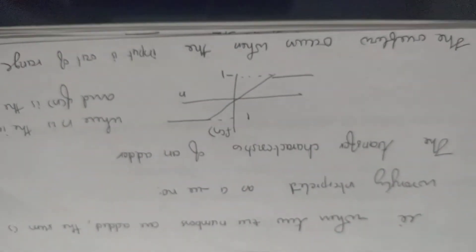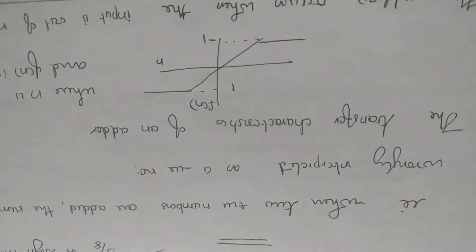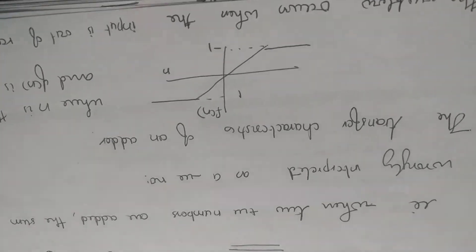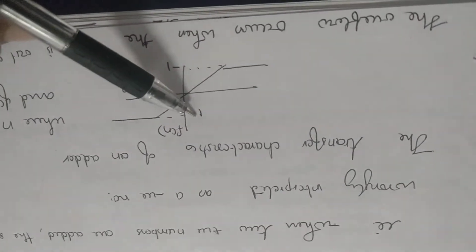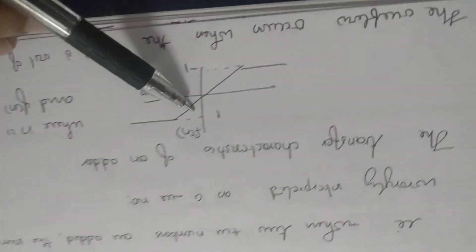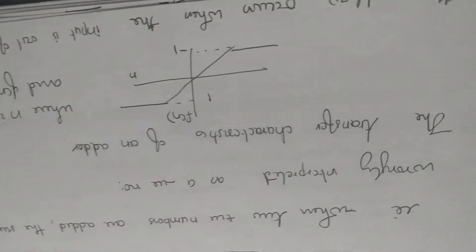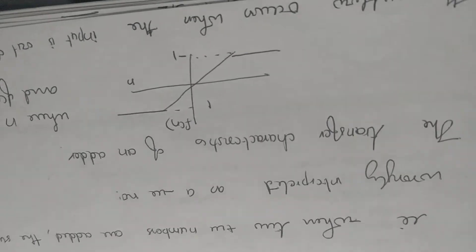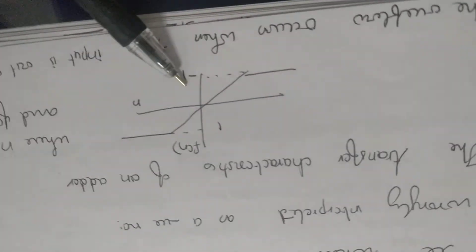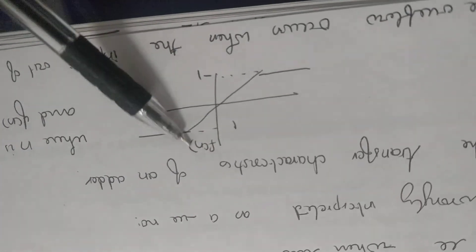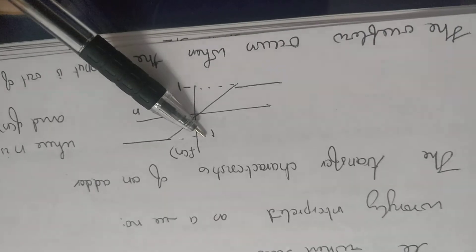To avoid this, we need to clip the sum. When doing addition, we clip the result to the maximum and minimum values. After exceeding the maximum value, we clip it — the output will not exceed the maximum value. The transfer characteristics show n versus f(n), and the range will be minus 1 to 1. This overflow occurs when the input exceeds the range of minus 1 to 1.